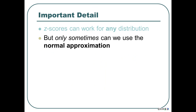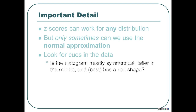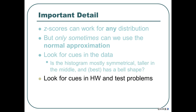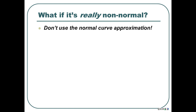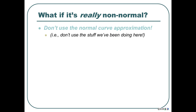You have to look for clues in the data. If the histogram is pretty symmetrical, taller in the middle, and has a bell-like shape, then go ahead and use the normal distribution. In test and quiz problems, if I say 'approximately normal' or 'normally distributed,' then yes, use the normal distribution. If there's a clear skew or crazy outliers, do not use this process. The more non-normal the distribution, the more wrong your answers will be.